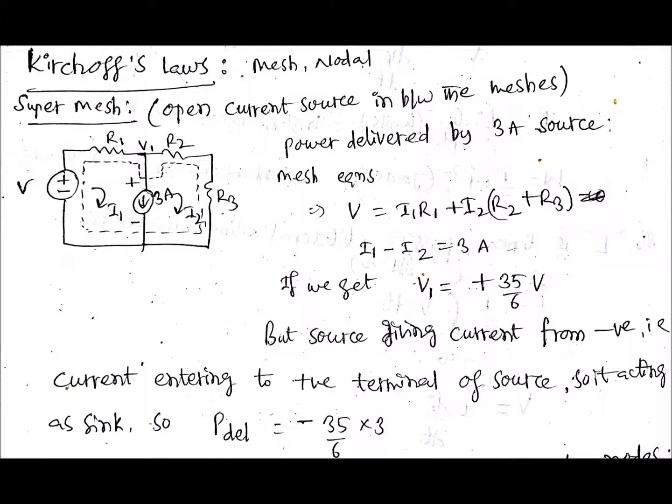Here the equation will be V equals to i1*R1, that is the first mesh, and you can directly enter now into the second mesh because there is current source. Then it will be i2*(R2+R3). So that's it.